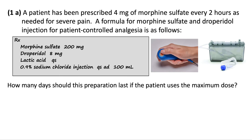For a lot of these questions, we set up an initial scenario and then ask smaller individual questions using the same setup. Let's start with this first scenario: a patient has been prescribed 4 mg of morphine sulfate to be given every 2 hours as needed for severe pain. A formula for morphine sulfate and droperidol injection for a patient-controlled analgesia is provided.